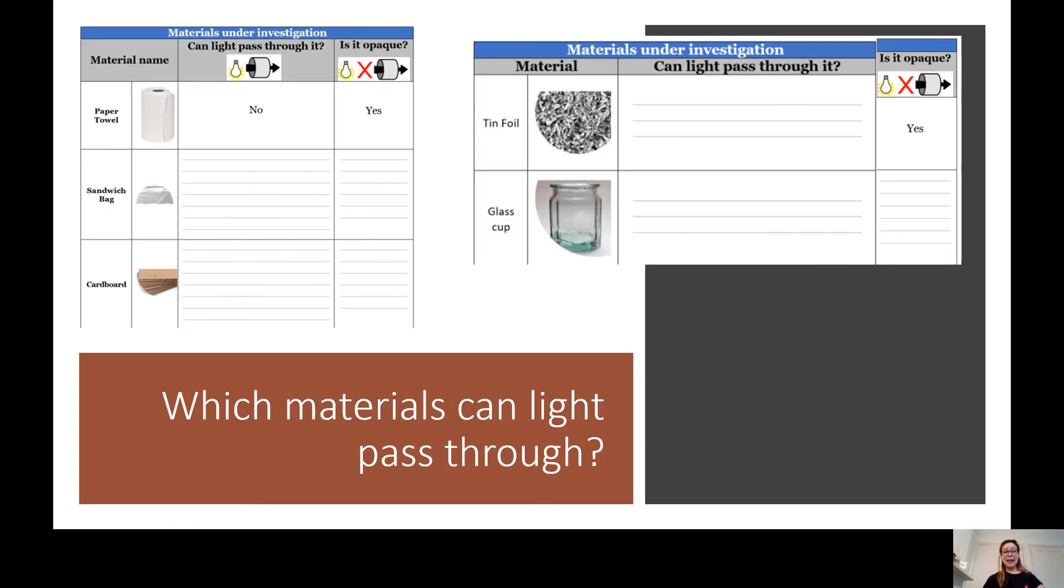OK, now let's move on to the exciting part, which is the experiment. So this experiment, we're going to look at which materials can light pass through them. We're going to be looking at paper towels, sandwich bags, cardboard, tin foil and glass. If you don't have these objects, it's absolutely fine. You can substitute them with similar objects or just leave them out if you don't have them.